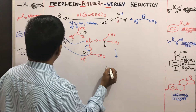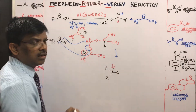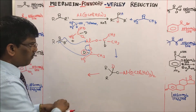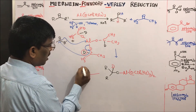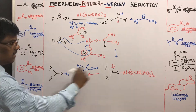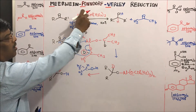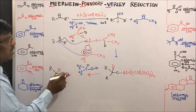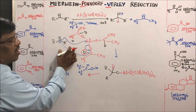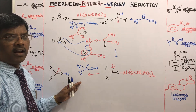The mixed alkoxide now carries deuterium from the isopropoxide. Then another hydrogen comes from isopropyl alcohol, confirming that the two hydrogens in the product come from two different sources: one from aluminum isopropoxide and one from the solvent isopropyl alcohol. That is why excess isopropyl alcohol is used.